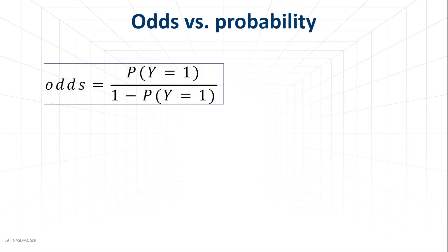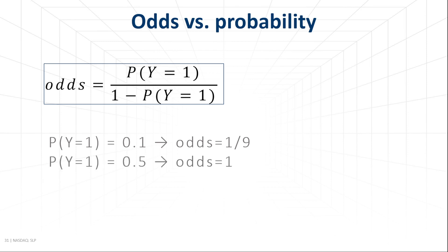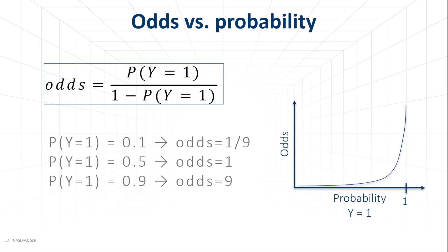Before we move to the case with several covariates, let's look more closely at the difference between the odds ratio and the probability. If the probability that y equals 1 is 0.1, then the odds are 1 to 9. If the probability is 0.5, then the odds are 1. And when the probability is 0.9, the odds are 9. So you can see that the increase of odds depends on the original probability, and as shown in the plot, the odds become extremely large when probability approaches 1.